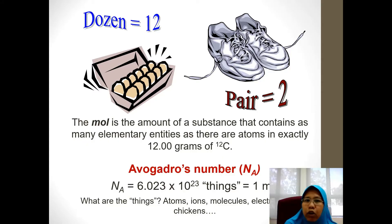You have 12 eggs in a dozen, you have two shoes in one pair of shoes, but how many atoms do you have in one mole? In one mole we have 6.023 times 10 to the power of 23 entities or things. Things can be atoms, ions, molecules, electrons, chickens even. What is mole? The mole is the amount of substance that contains as many elementary entities as there are atoms in exactly 12 grams of carbon-12.